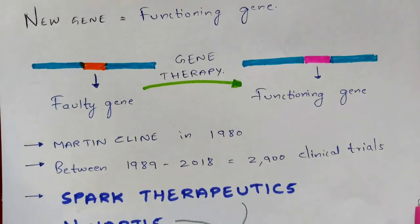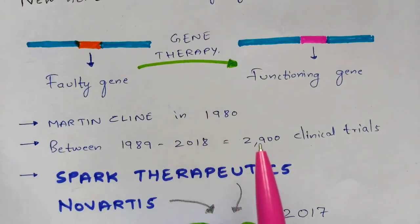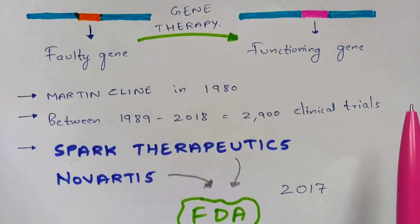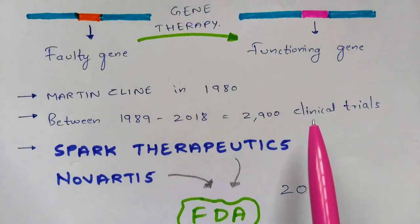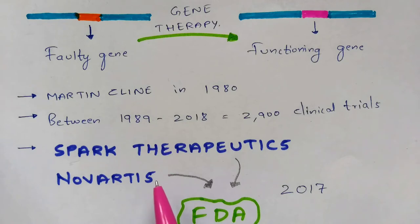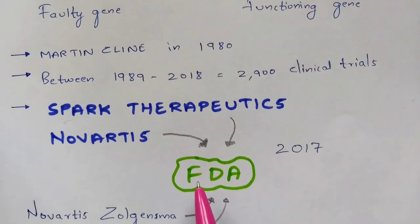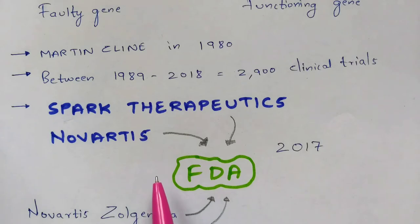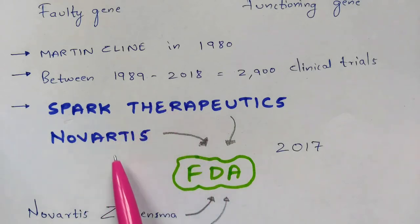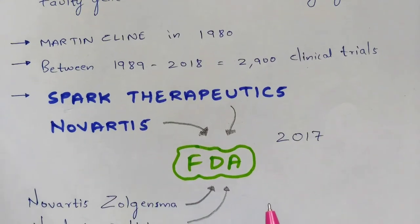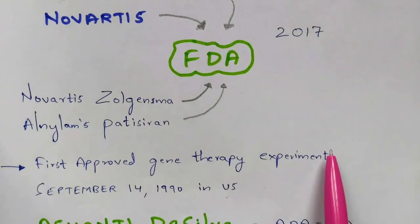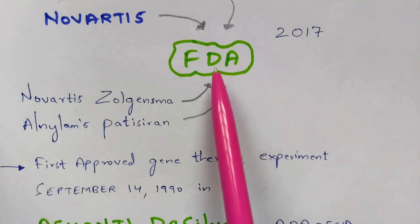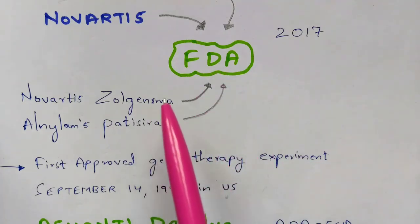Gene therapy was initially started by a scientist called Martin Cline in the year 1980. Between 1989 and 2018, there were 2,900 clinical trials done on gene therapy. Two companies — Spark Therapeutics and Novartis — were approved by the FDA in the year 2017. In the same year of 2017, two drugs were introduced and authorized by the FDA to cure genetic disorders.